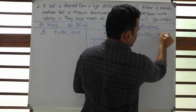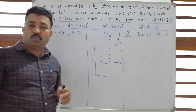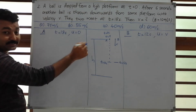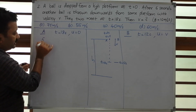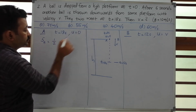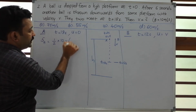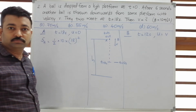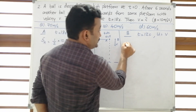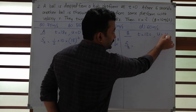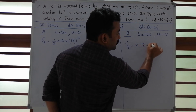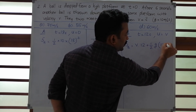Applying S = ut + ½gt² for both balls. Ball A: u = 0, t = 18 s, G = 10, so S_A = ½ × 10 × 18² = 1620 m. Ball B: initial velocity V, t = 12 s, so S_B = V × 12 + ½ × 10 × 12² = 12V + 720.